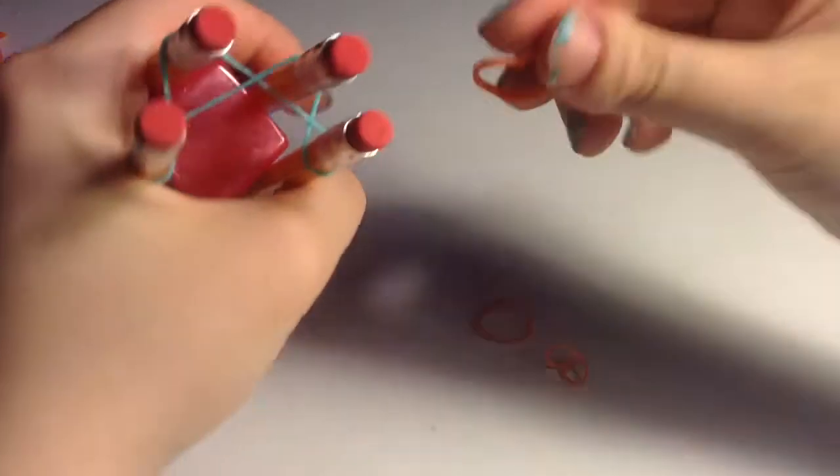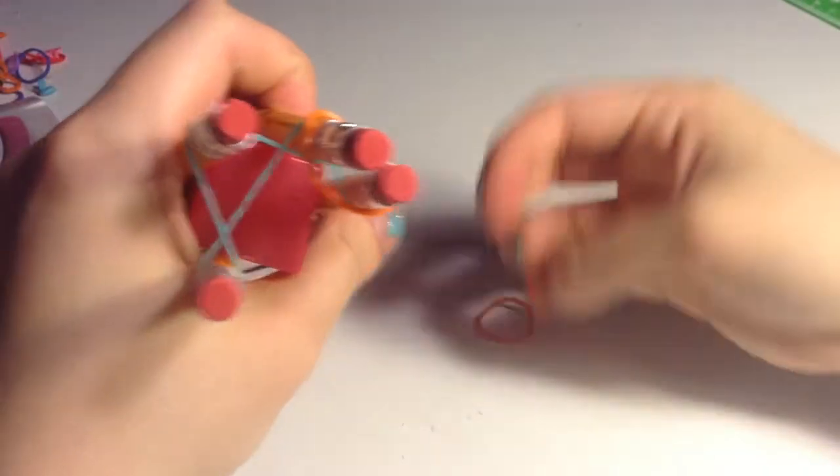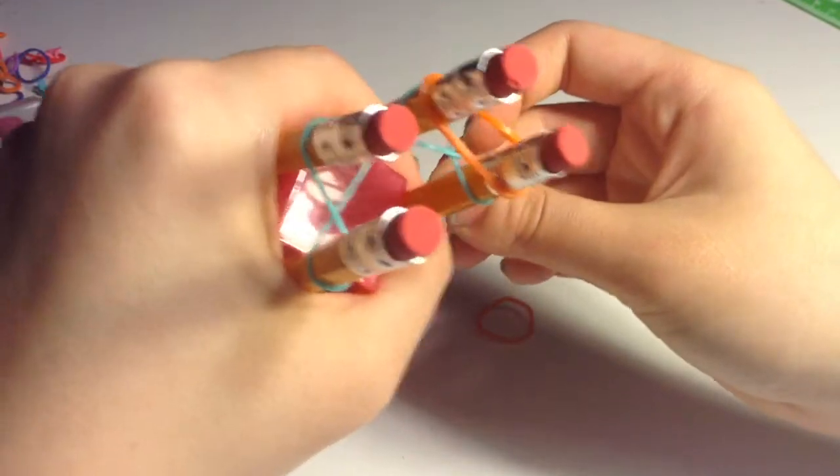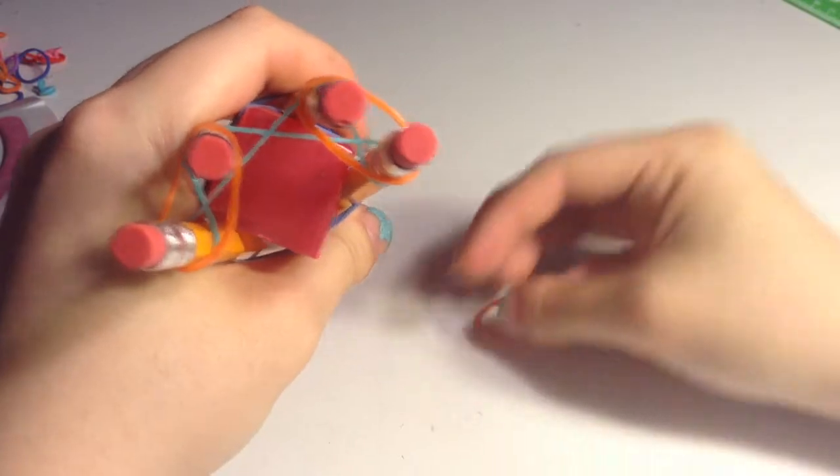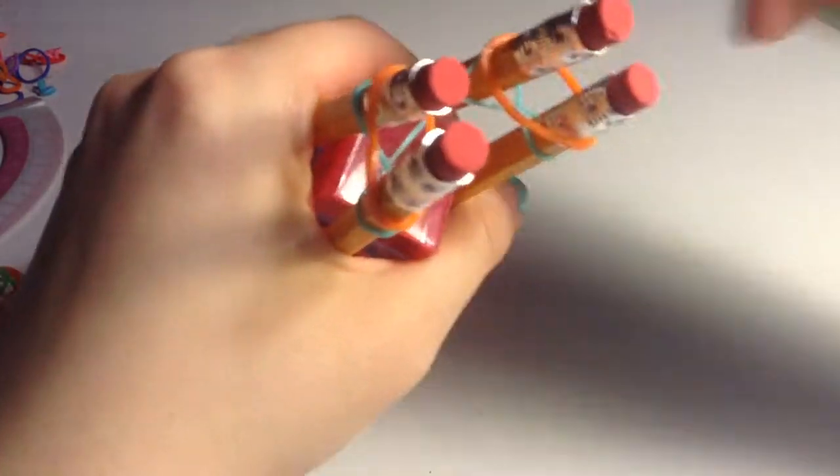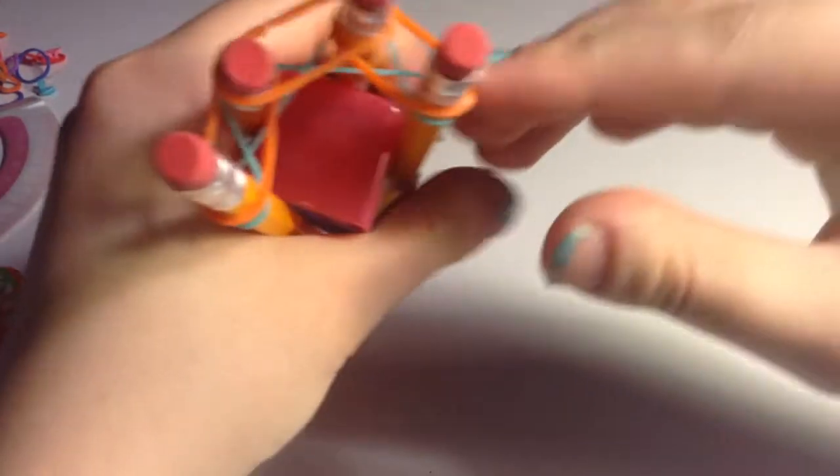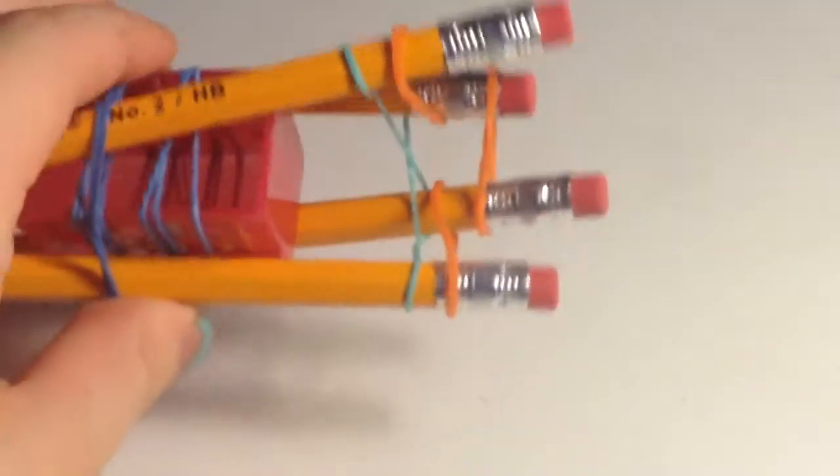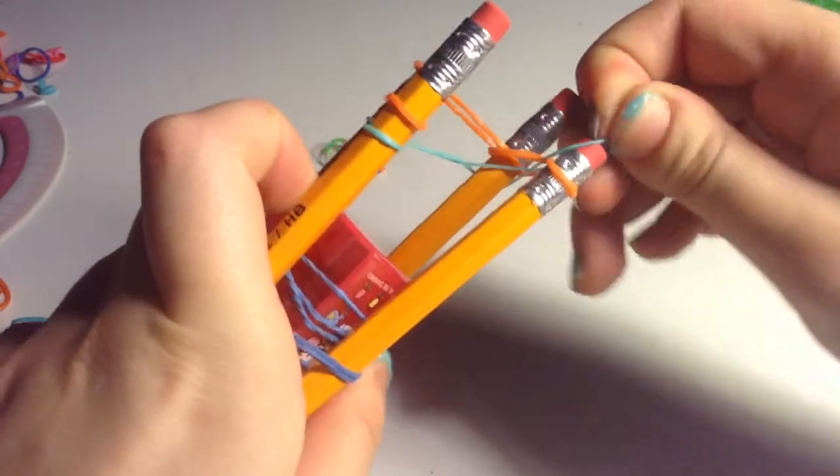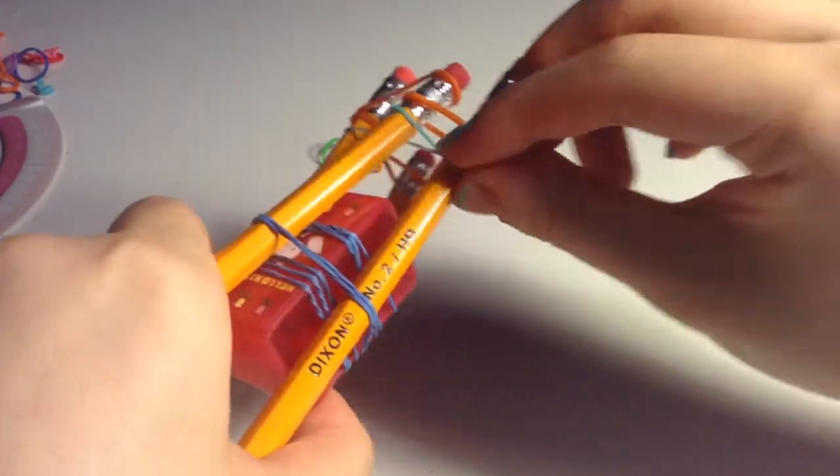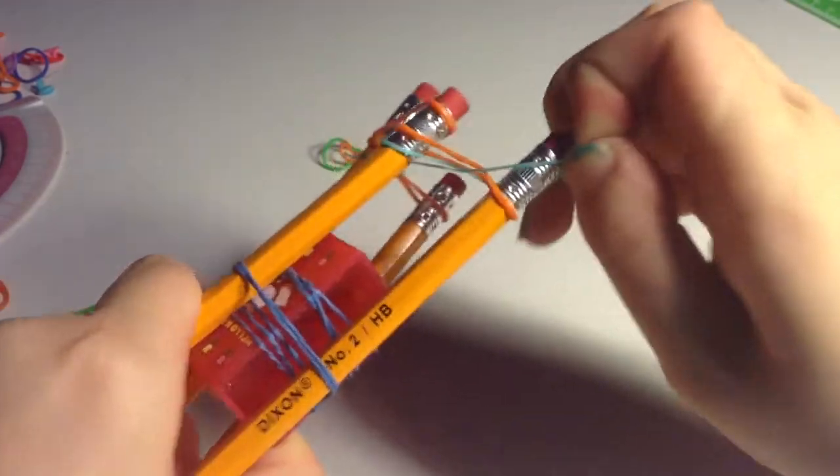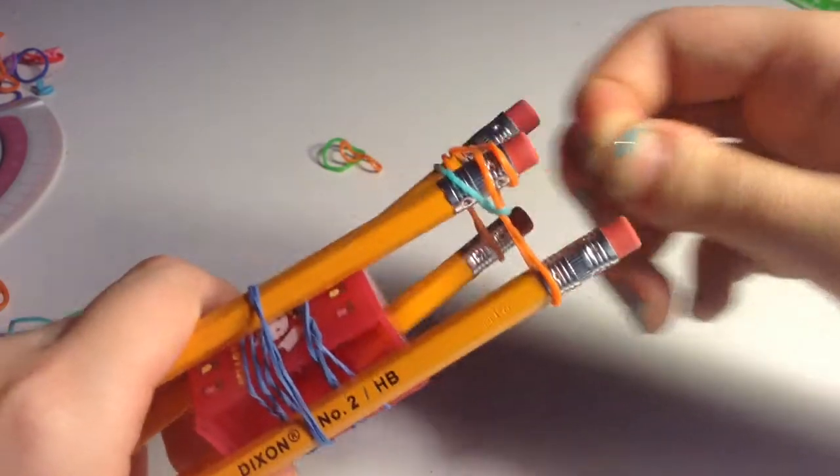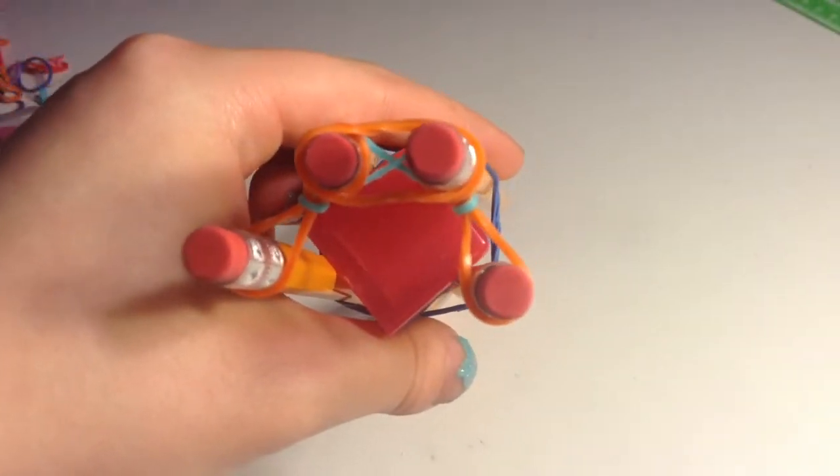You need three of your second color and just put them over the two pencils as shown. Then you're going to take your third one and put it over the side that has the figure eight. On the side without the figure eight, bring the lowest band over the rubber band that you just put on.